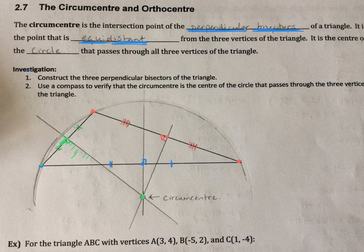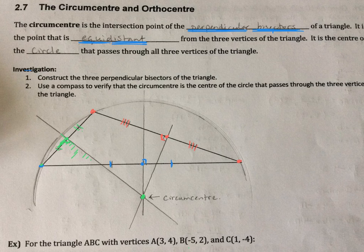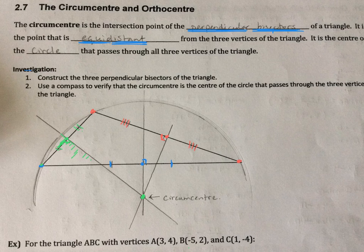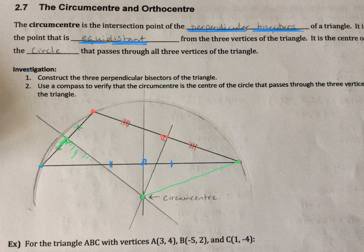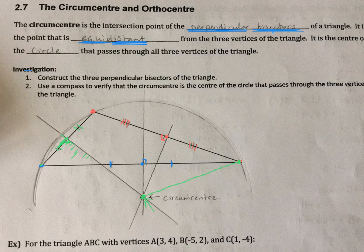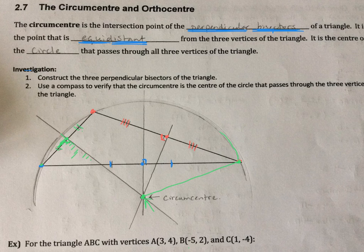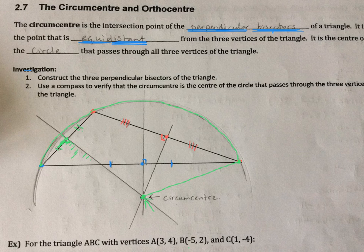Now for the second step of this, use a compass to verify that the circumcenter is the center of the circle that passes through the three vertices of the triangle. So I took my compass, which unfortunately was kind of wobbly, but I put the point of my compass here, and then I extended it so that the pencil part was going through one of the vertices. So I had my compass going from here to here, and the pointy part is at the circumcenter right here. And I drew that arc.